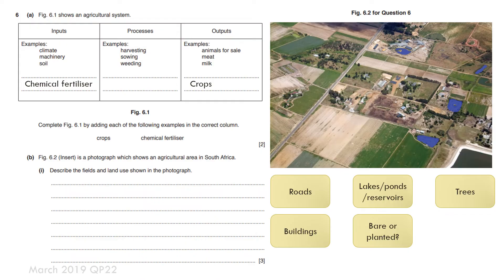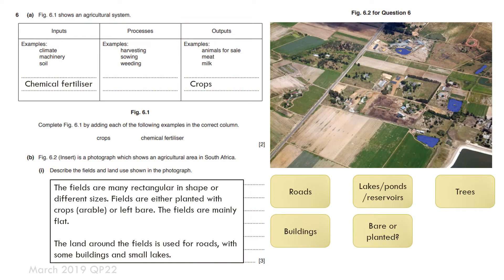I have to then describe the land use of the other fields. How has that land been used? Well possibly for roads, buildings, lakes, ponds, reservoirs. Again various planted fields and there might be some trees. I can add to the bottom that the land around the fields is used for roads with some buildings and small lakes.